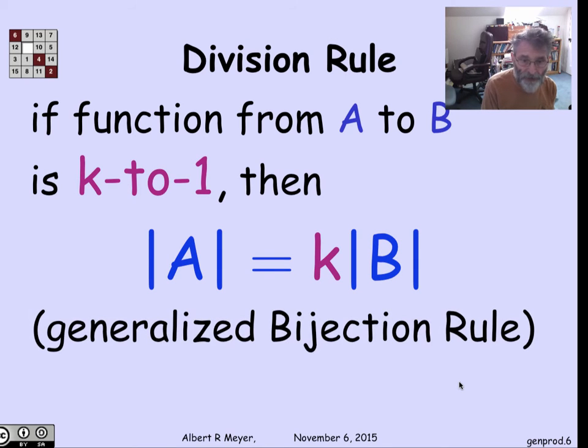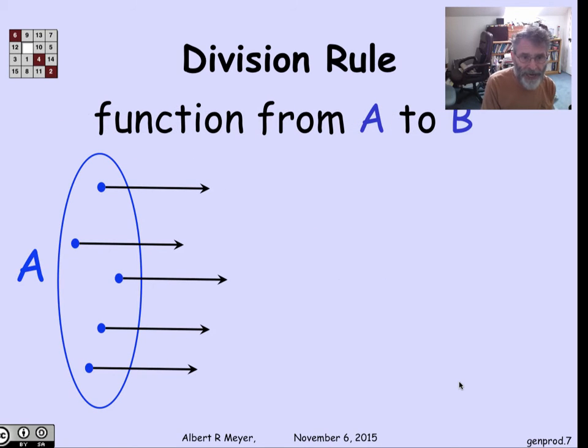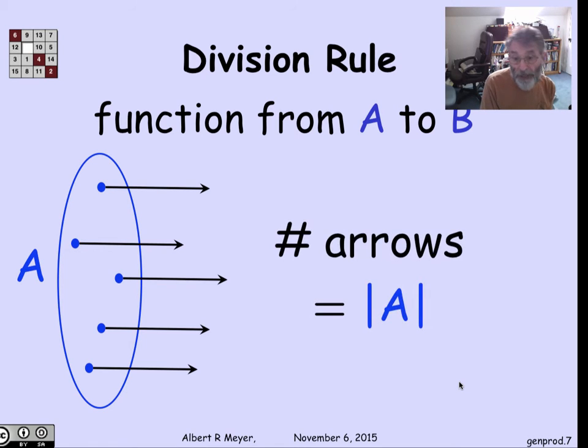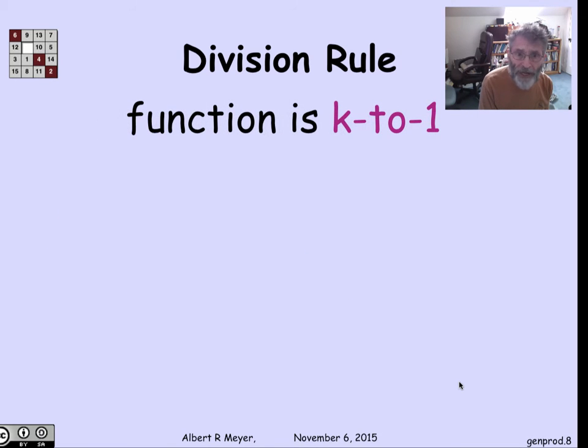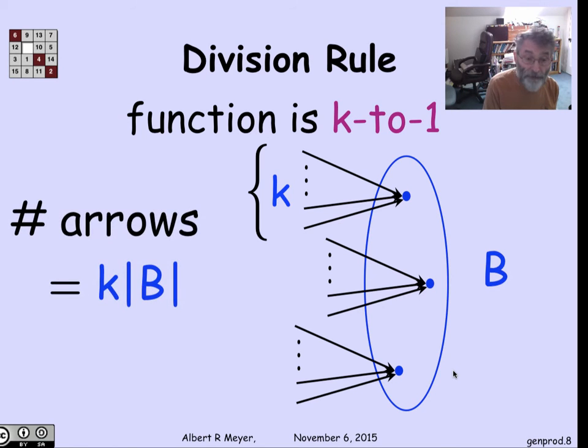Let's think about that in terms of arrows. If I have a function from A to B, I have exactly one arrow out of every element of set A, which means the number of arrows is the size of A. If it's k-to-1, for every element of B there are exactly k arrows coming in. Then the number of arrows is k times the size of B. That's why the size of A, which is one way of counting arrows, equals k times the size of B, which is the other way.